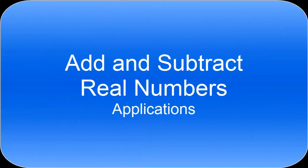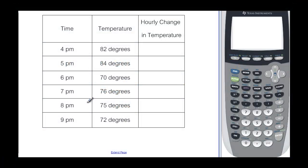In this video we're going to talk about adding and subtracting real numbers using applications. This first example is asking us for the hourly change in temperature. If you look at this from 4 o'clock to 5 o'clock we went from 82 degrees to 84 degrees, and most of us can look at that and say it went up two degrees, but how would we figure that using addition and subtraction?